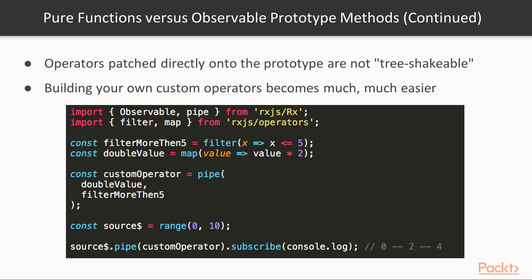To wrap up, let's repeat what we've learned in this video. An operator is a function which creates a new observable based on the input observable. The purpose of an operator is to modify or filter originally emitted values in the way we need for the project tasks. Operators can be pure functions or observable prototype methods. Pure function operators are called pipeable because they can be composed with the pipe method. You can build custom operators from other pipeable operators.